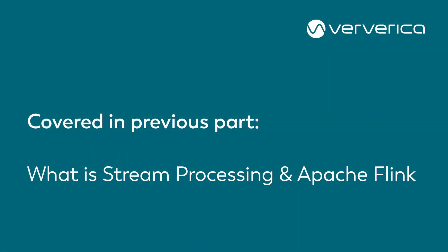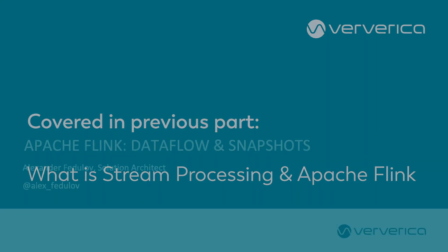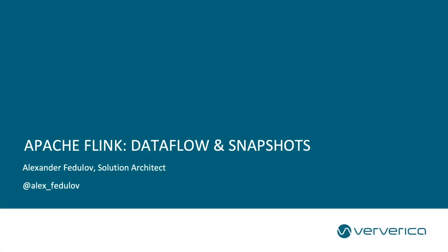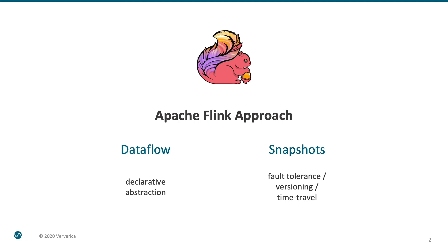In our previous video we discussed the motivation behind stream processing in general and briefly introduced Apache Flink. In this video we will go deeper. We will start looking into how Flink approaches the challenging task of distributed and fault-tolerant stream processing. The basis for our discussion will be two core concepts: the dataflow abstraction and the snapshots mechanism of Flink.